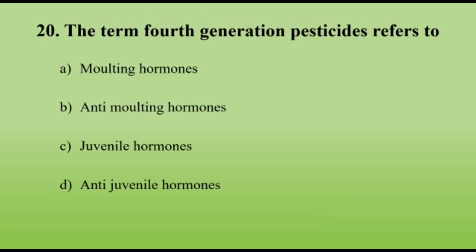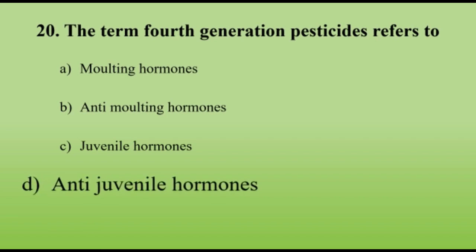The term fourth generation pesticides refers to anti-juvenile hormones. Juvenile hormones themselves are referred to as third generation pesticides.